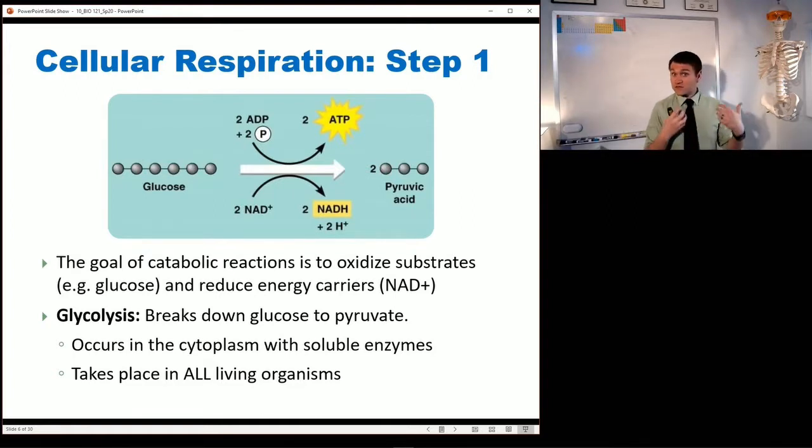Now all this happens in the cytosol of the cell, it happens outside of the mitochondrion and then those pyruvates are allowed to enter the mitochondrion where they will be oxidized further in order to release even more energy and get more ATP and get more NADH and other coenzymes as well.